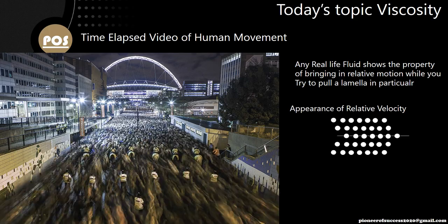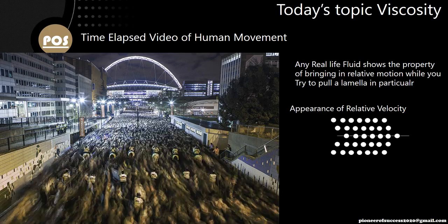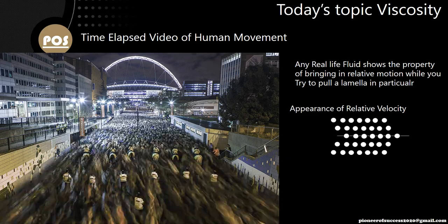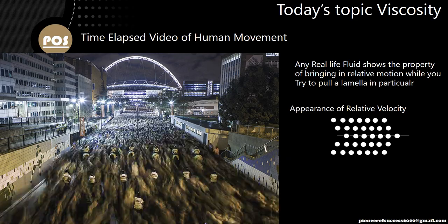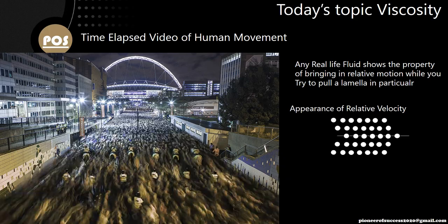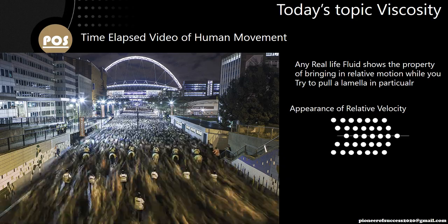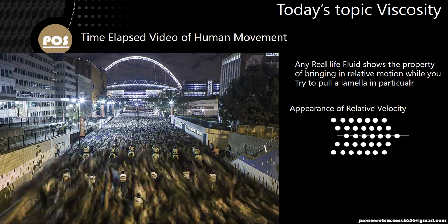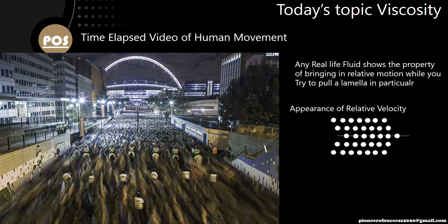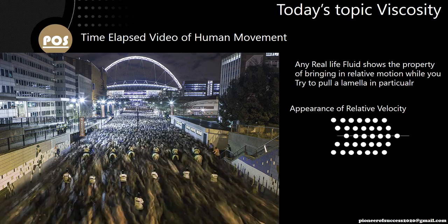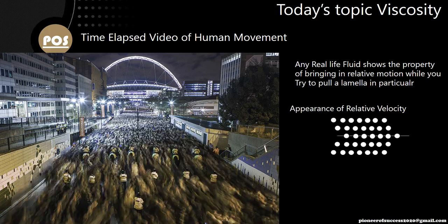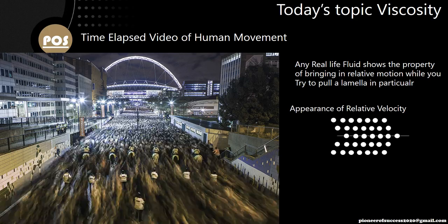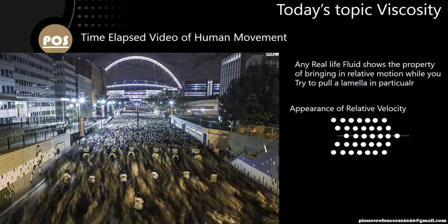If this difference is higher, then you have a higher viscosity. If this difference is less, you have a less viscosity. For ideal fluid, there will not be any difference — if you pull a middle lamella, the adjacent lamella will also move with the same velocity. That is called ideal fluid and an ideal fluid has zero viscosity.